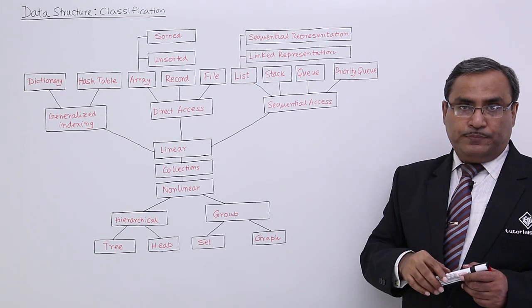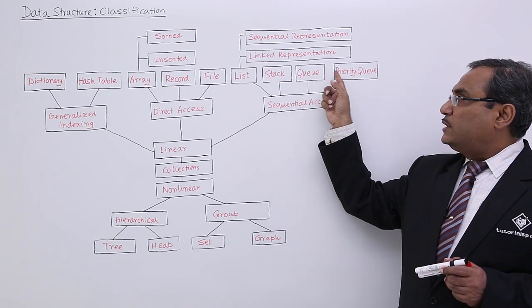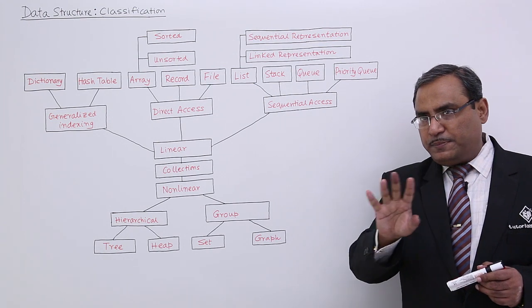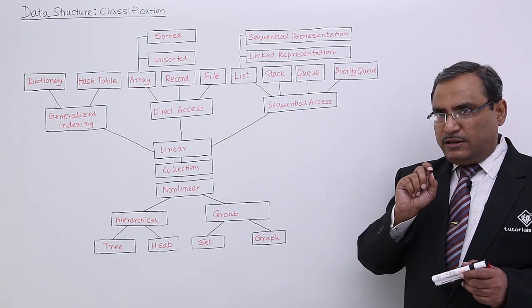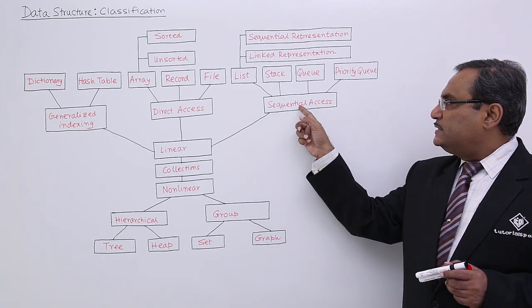We also have priority queues. For each of these types—queues, stacks, and lists—we have a discussion in separate videos. Please watch each one of them. These are sequential access structures.